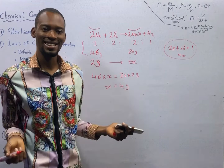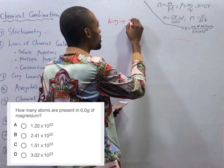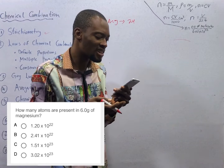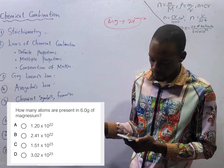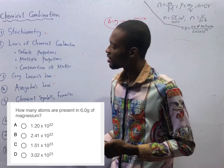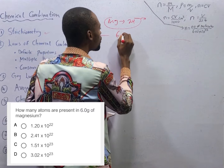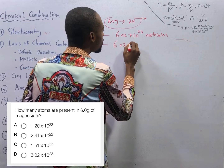How many atoms are present in 6 grams of magnesium? The molar mass of magnesium is 24. Since 1 mole of magnesium is 24 grams, and 1 mole of any substance contains Avogadro's number — 6.02 times 10 to the power of 23 molecules — 24 grams of magnesium contains 6.02 times 10²³ molecules.